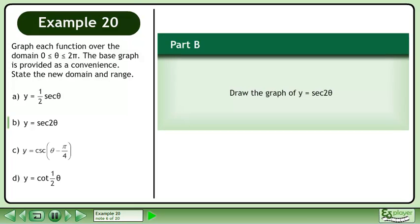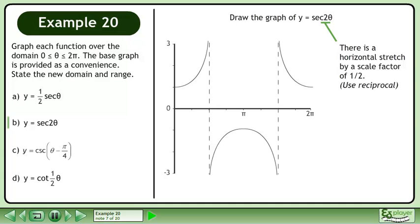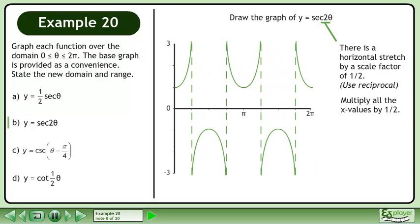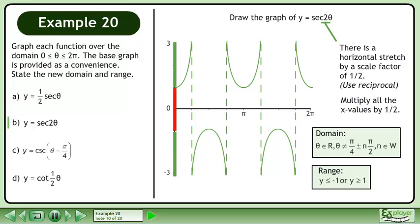In part b, draw the graph of y equals sec 2θ. There is a horizontal stretch by a scale factor of one half. Multiply all the x values by one half. The domain of the transformed graph is θ belongs to the set of real numbers with the restriction that θ cannot equal π over 4 plus or minus nπ over 2, where n belongs to the set of whole numbers. The range is y ≤ −1 or y ≥ 1.